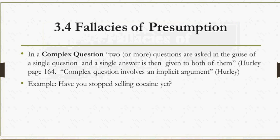Here's an example: 'Have you stopped selling cocaine yet?' The two possible answers are yes or no. If the person answers yes, that means that at some point they were selling cocaine. If the person answers no, it means they have not stopped — that they're still selling cocaine. Either way, there is a presumed or assumed argument that the person has at some point engaged in selling cocaine. This is fallacious because the presumption is being made for the person being asked.